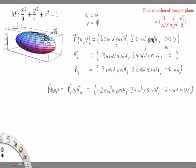So using this parameterization and a little bit of computation, we've found a normal vector. In fact, this gives us a normal vector to any point corresponding to U and V. Now I need to know the appropriate values of U and V to plug in so that I can get the specific point we're interested in.